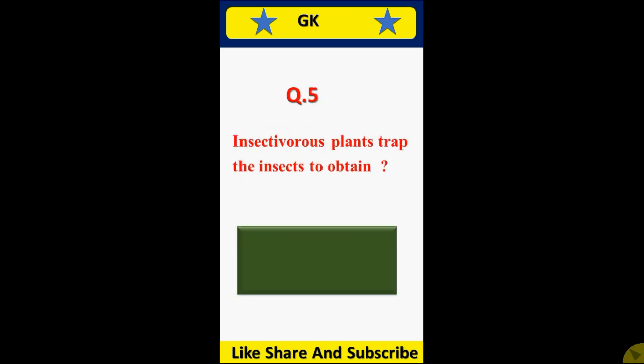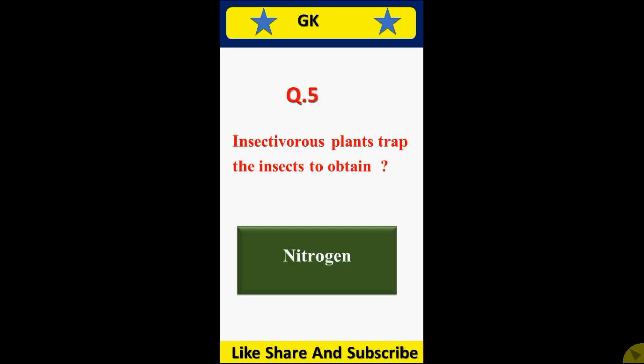Q5. Insectivorous plants trap insects to obtain? Answer: Nitrogen.